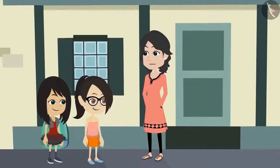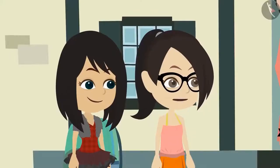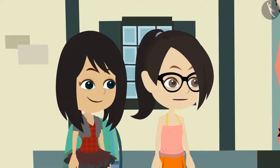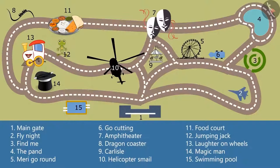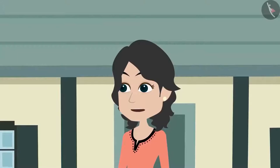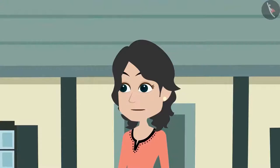But a map also helps to know what is situated where. Like by looking at the map, you can easily tell the location of the park. Then map is very useful for us. Where is the map used, madam? A map is used for so many purposes - for example, in a big park, a museum, a shopping mall, etc. Every city has a map which helps tourists to go from one place to another.